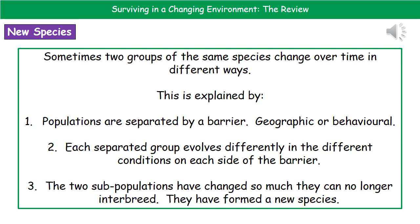As a result of that separation, each of those groups is going to evolve differently in different conditions. Over time, those two subpopulations will have changed to suit their own environments to the point where they can no longer interbreed. At that point — when they can no longer interbreed to make fertile offspring — we say they've formed a new species.